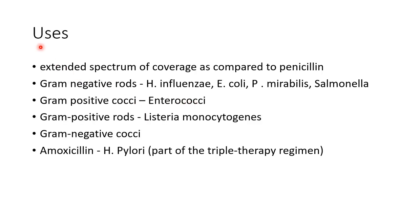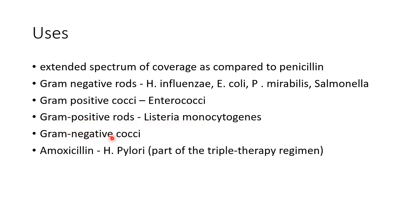Now let us see about the uses of Ampicillin. Ampicillin has an extended spectrum of coverage as compared to penicillin. So it can be used for infections caused by gram-negative rods like Haemophilus influenzae, E. coli, Proteus mirabilis, and Salmonella; gram-positive cocci like Enterococci; gram-positive rods like Listeria monocytogenes; and gram-negative cocci.